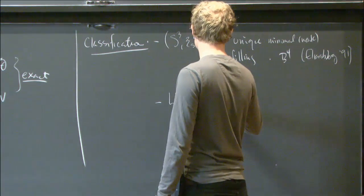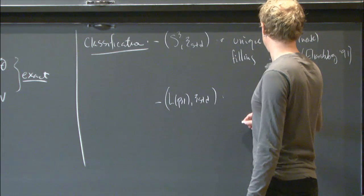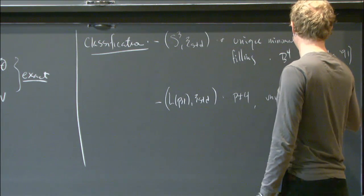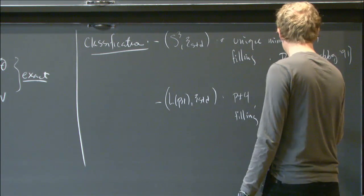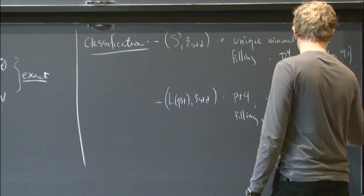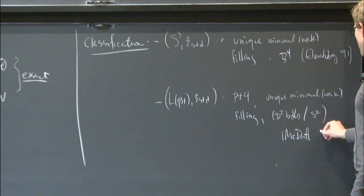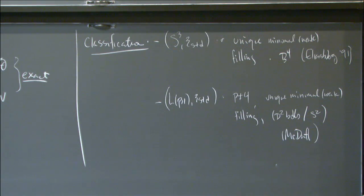You can generalize this to lens spaces with something called the standard contact structure. All lens spaces have one contact structure that lifts to the standard contact structure on S³. In that closed world, if p is not equal to 4, there's again a unique minimal weak filling, and they're all disk bundles over the sphere. This is McDuff plus other work. When p equals 4, there are actually two fillings: one as a disk bundle, and one as the complement of a quadric curve in CP².